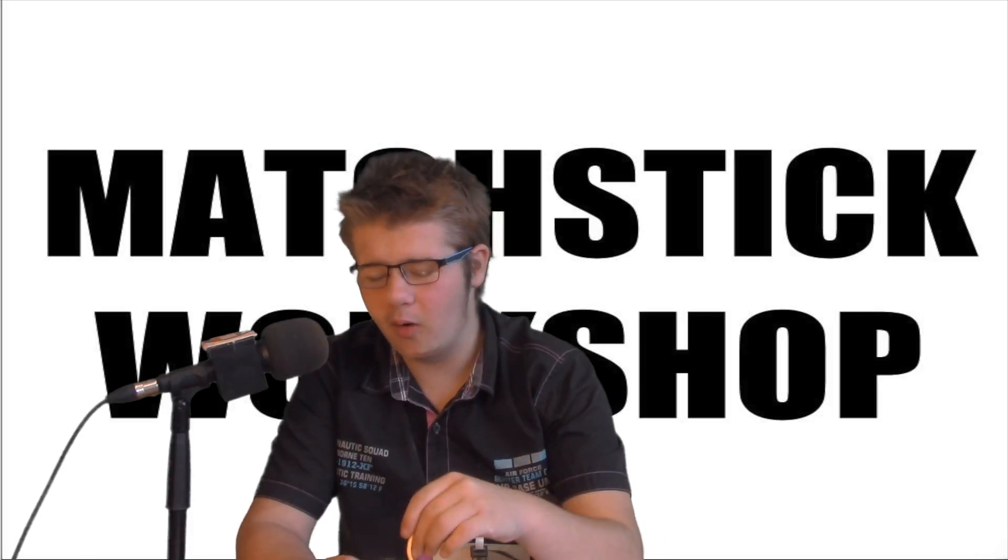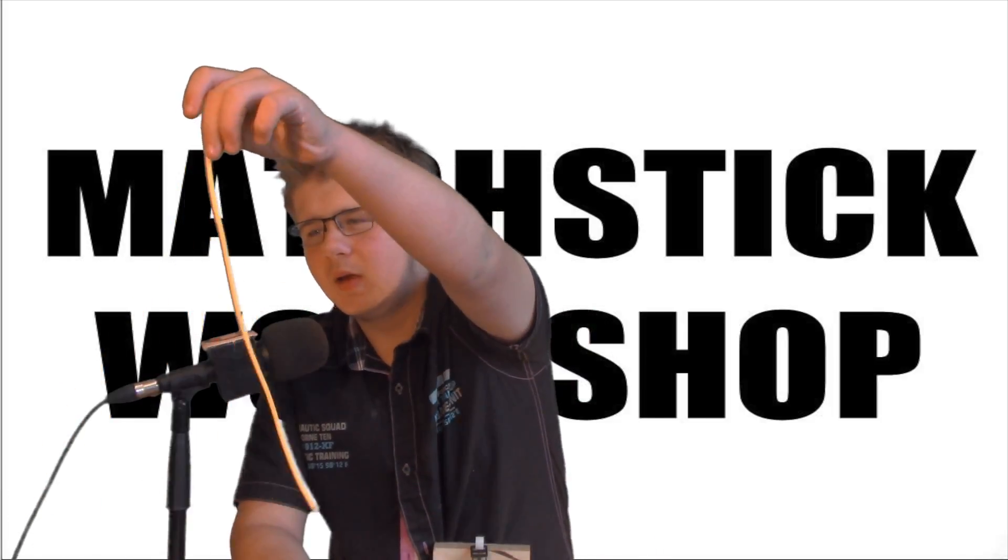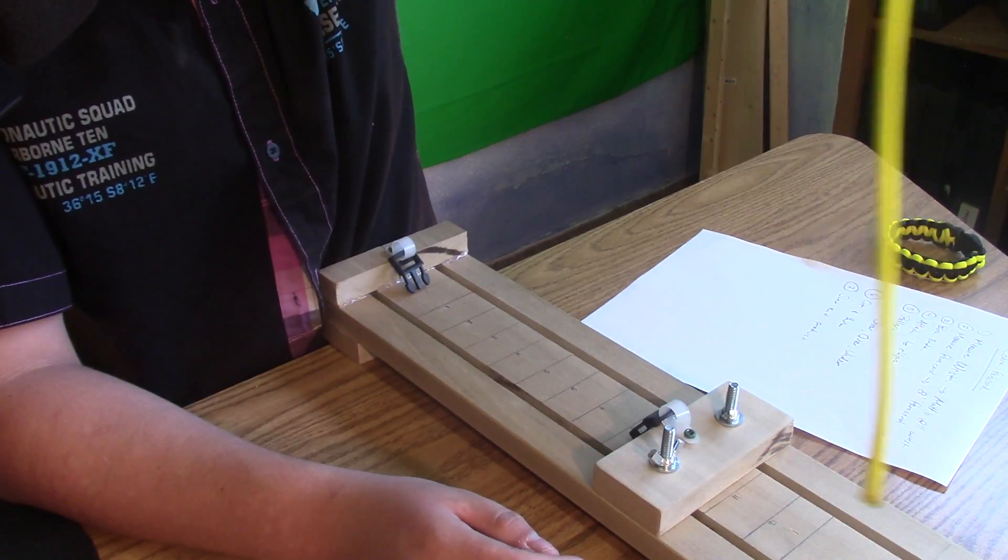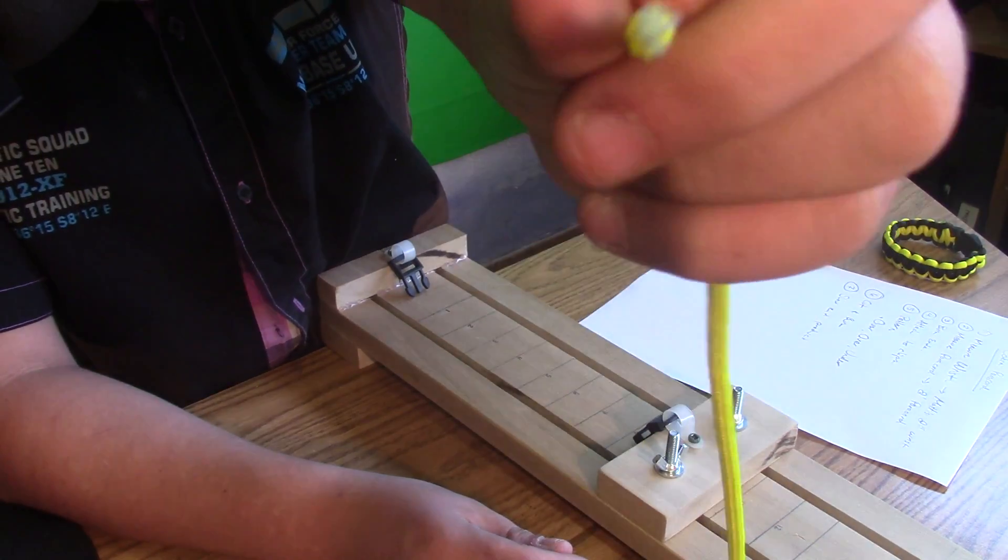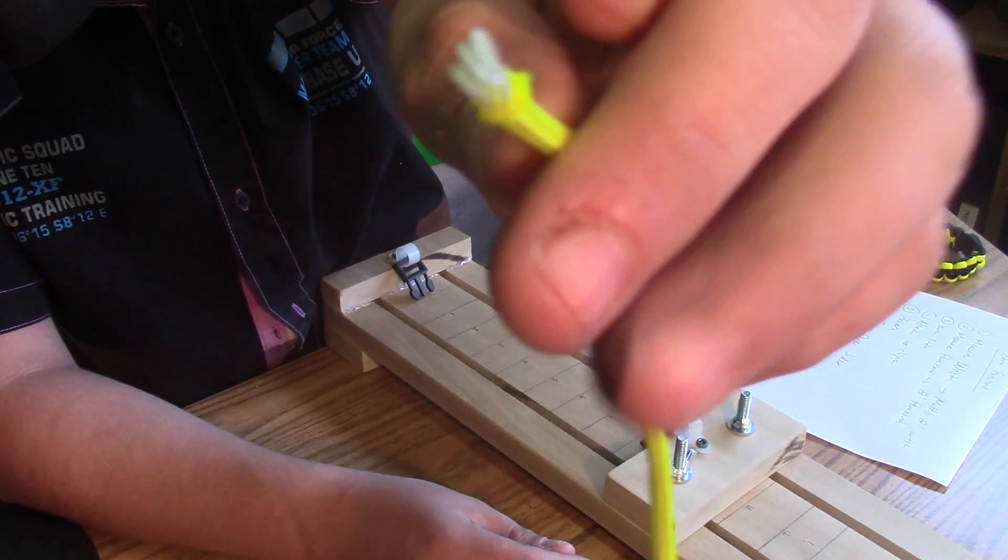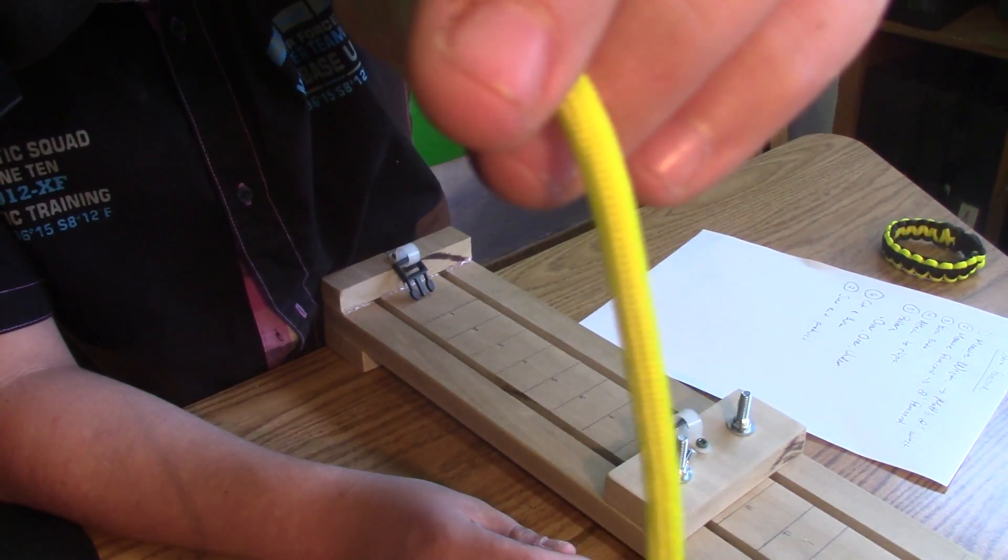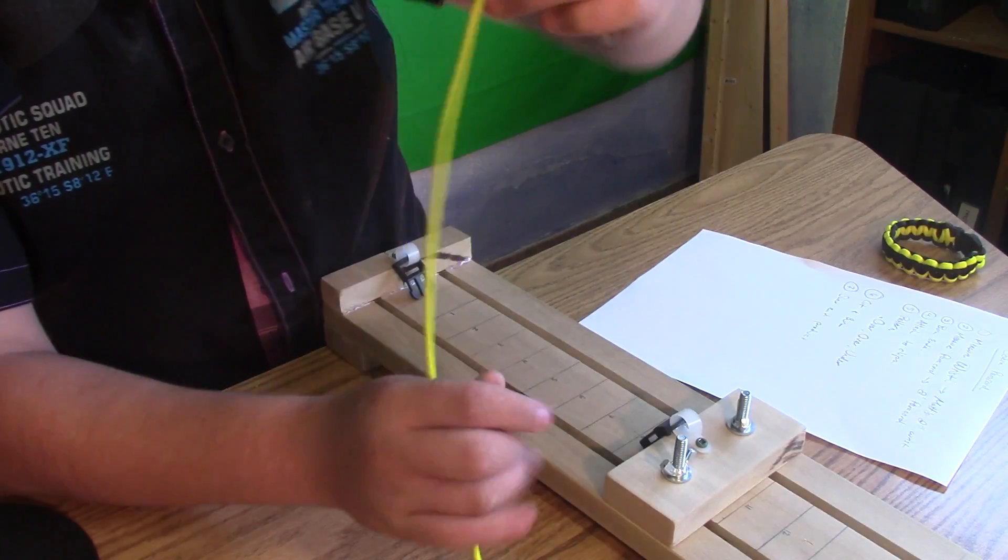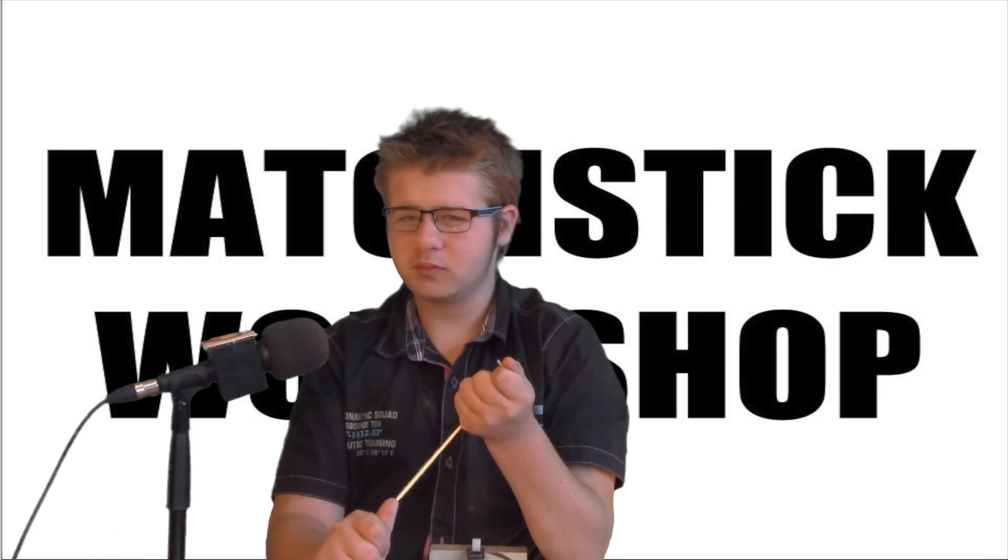To make the bracelet, you're going to need paracord. This is it. It's a little string. It comes in different sizes. And as you can see, inside it has little pieces of string that overlap it inside. So it's very strong.